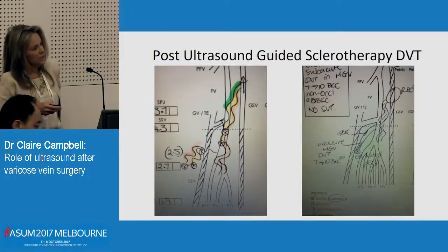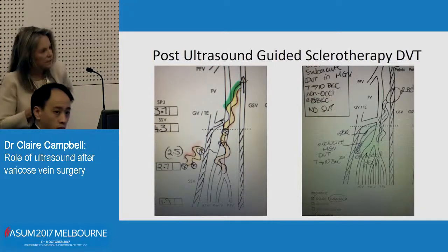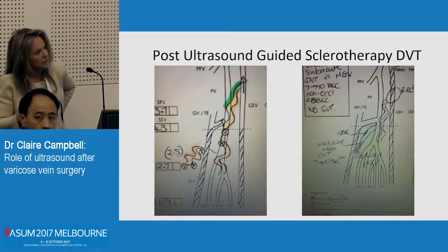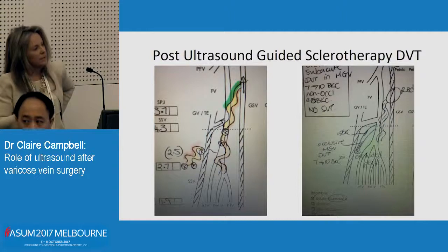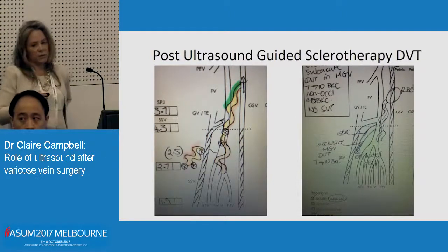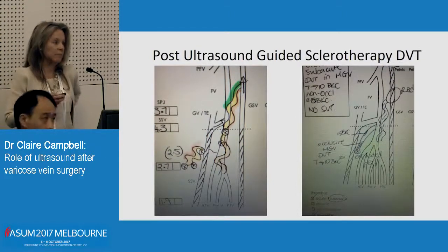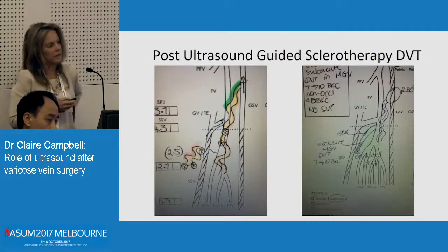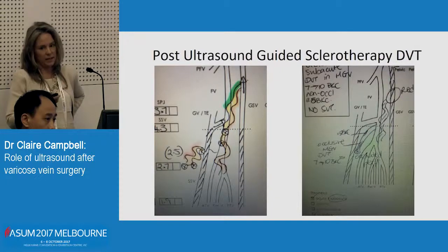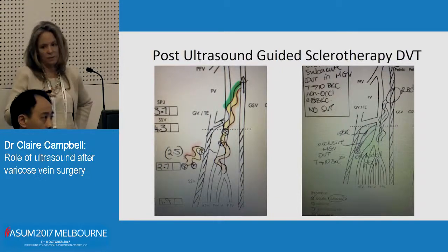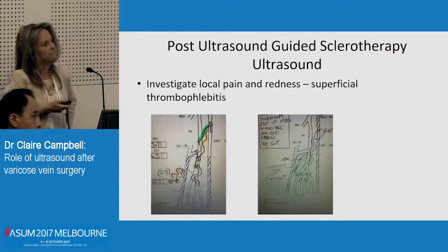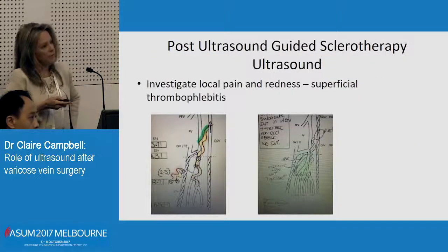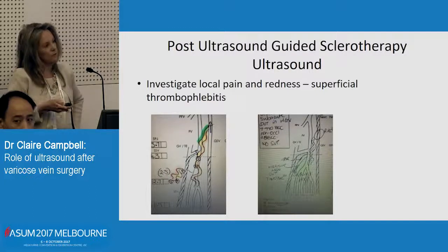This patient has a thrombosed perforator and that's given them a gastrocnemial vein DVT. These patients are usually put on some low-dose Clexane, or if they're travelling, I'll put them on Apixaban. We know that if you anticoagulate them, they've got a lower risk of getting a recurrent DVT. Also investigate superficial pain and redness — that's just superficial thrombophlebitis.